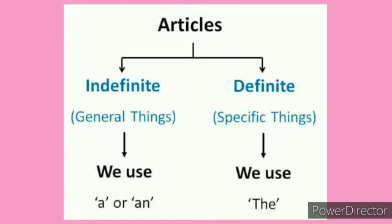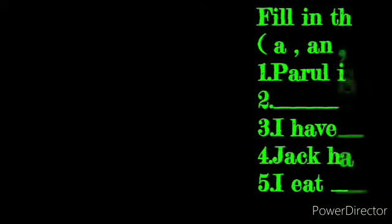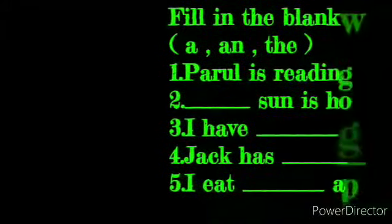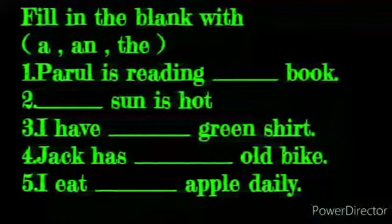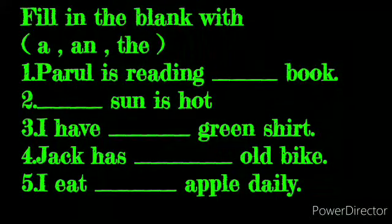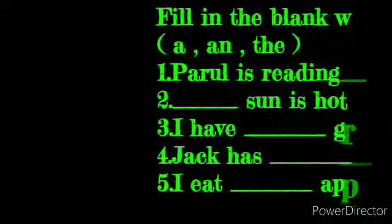So now we'll proceed with a worksheet. I'll read it for you. First question is, fill in the blanks with 'a', 'an', and 'the'. Parol is blank book. Sun is hot. I have blank green shirt. Jack has blank old bike. I eat blank apple daily.